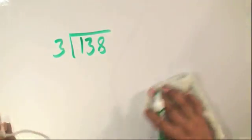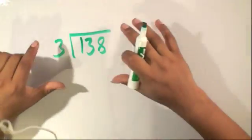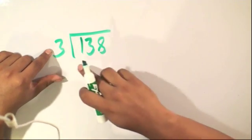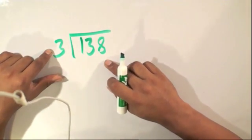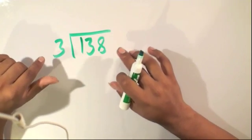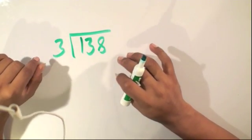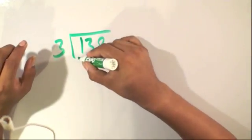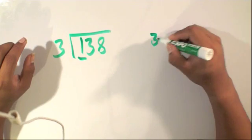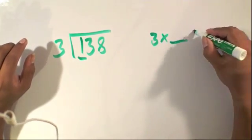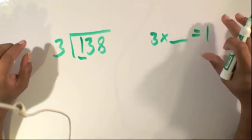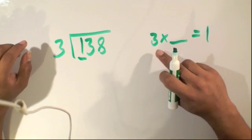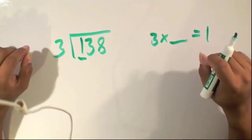So let's take a look at this problem, and what it's asking is, 3 times what number will give me 138? Now we don't know that off the top of our head, so we're going to have to start small and look at the first digit. And we can ask, 3 times what number will give me 1? But 1 is actually a very small number, and there is no number that I can multiply by 3 to give me 1.